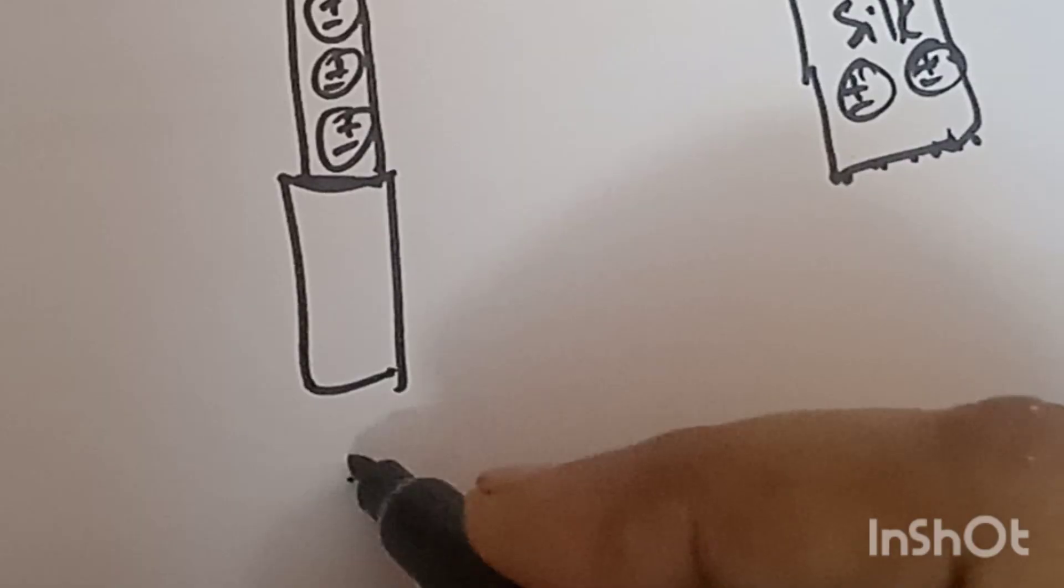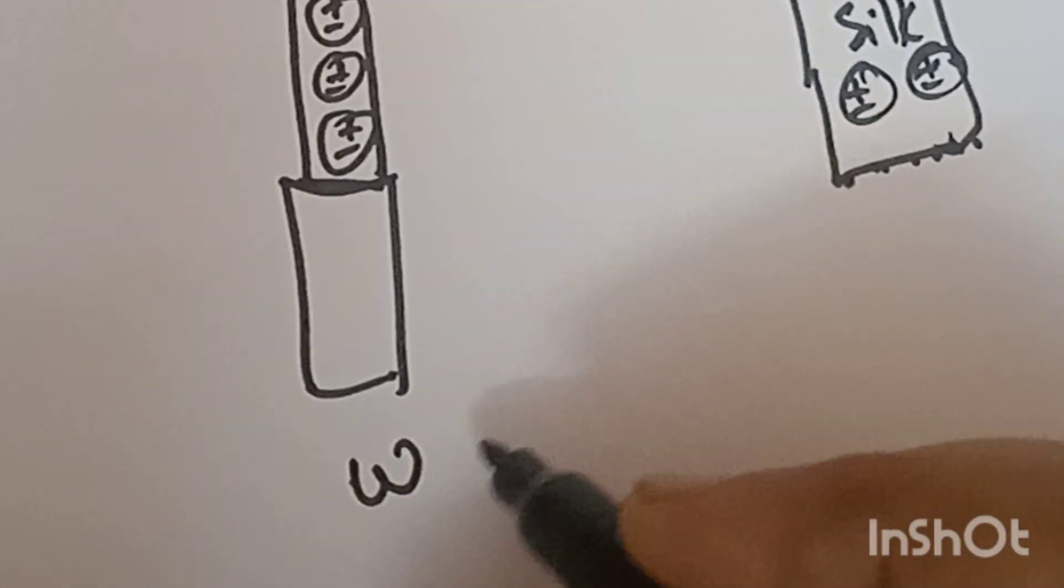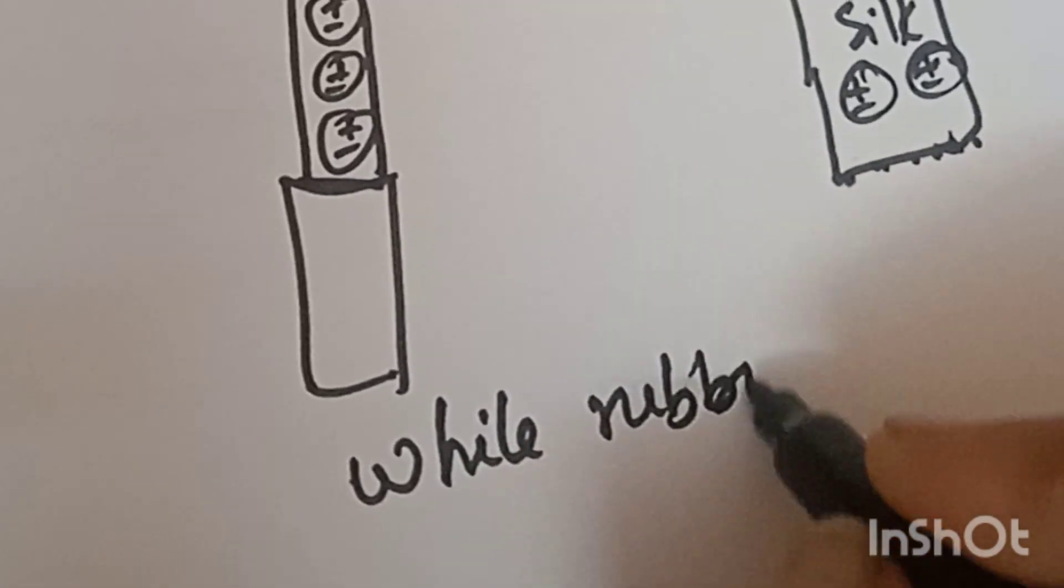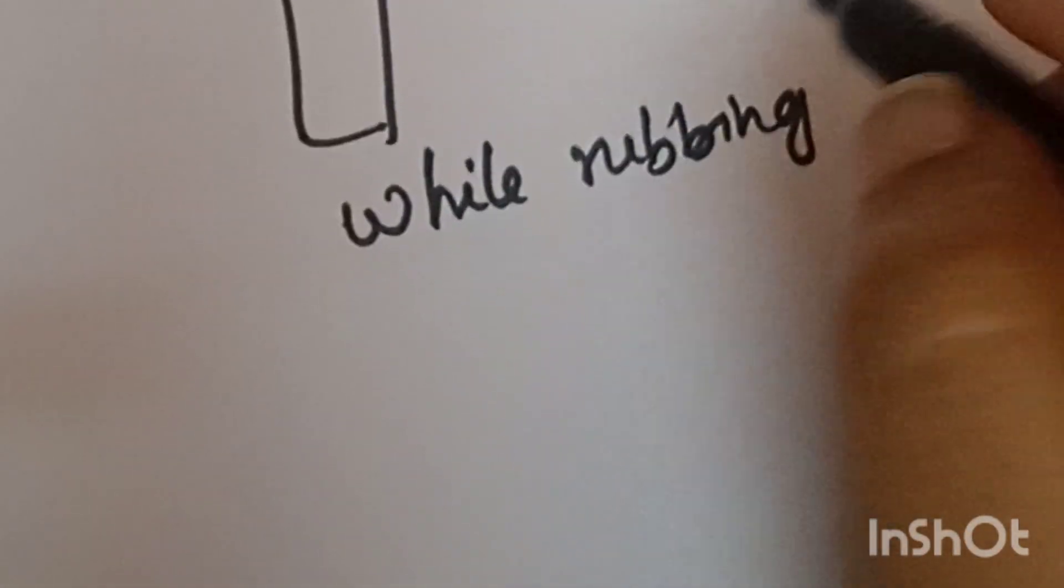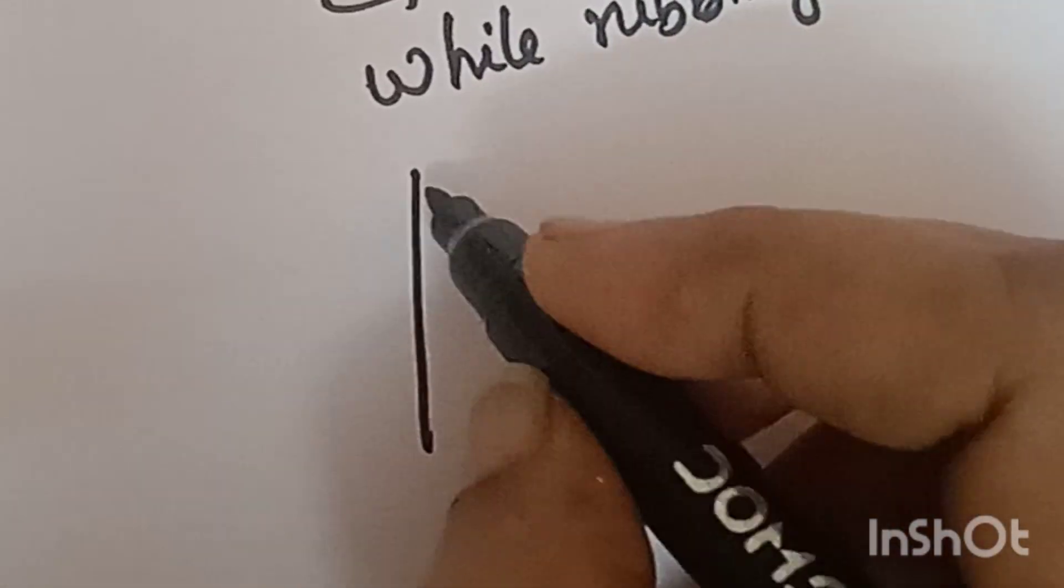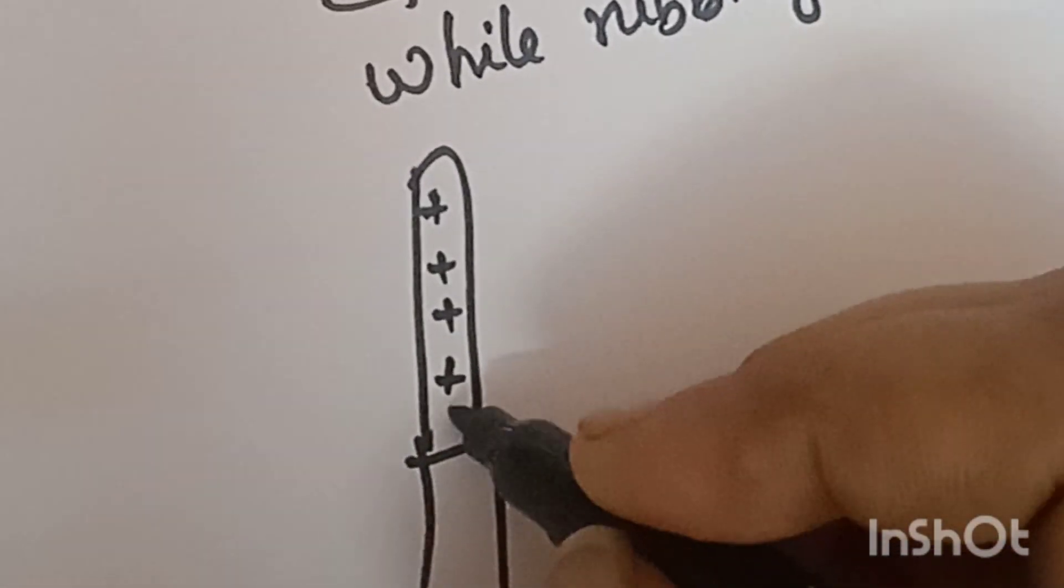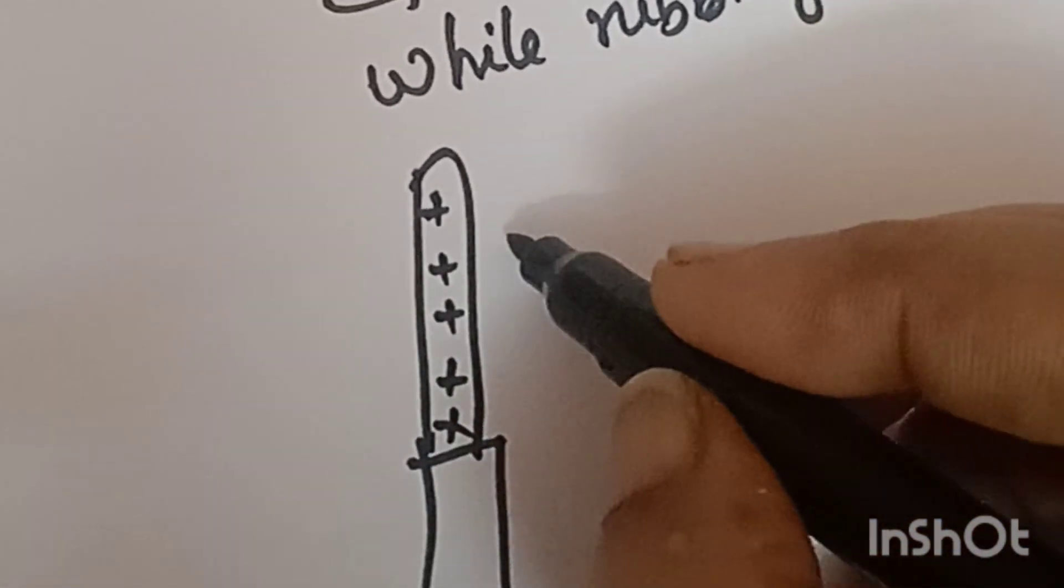Now let's rub the glass rod with silk cloth. While rubbing, electrons are negative charges that transfer. The glass rod becomes positively charged and the silk cloth becomes negatively charged.